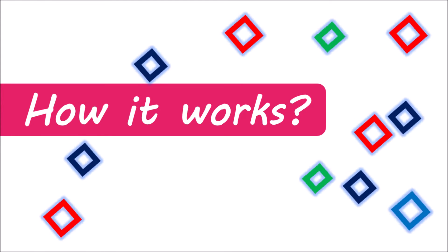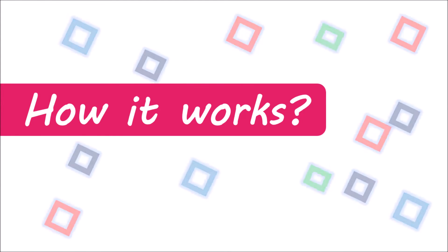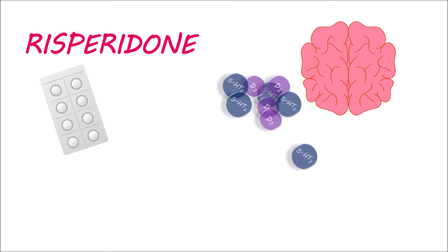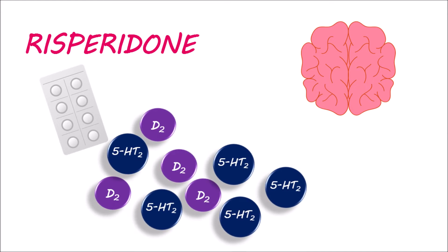Let's start our discussion with how this medication works. Risperidone plays a key role in the treatment of psychosis because of its unique action on a few chemical mediators. Psychosis results from overstimulation of a few receptors in the CNS. Among these, dopamine D2 receptors and serotonin 5-HT2A receptors are more important.